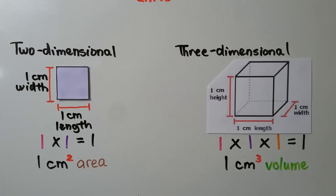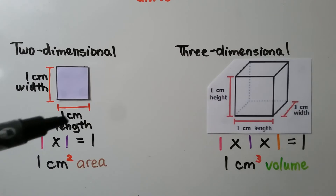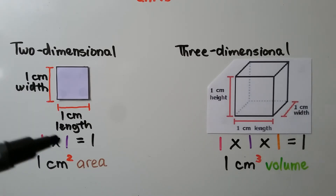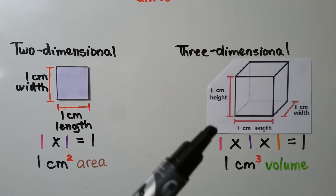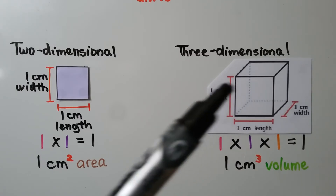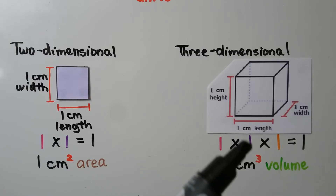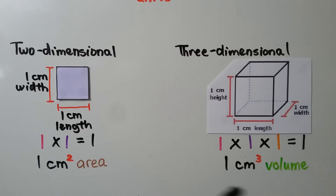For two dimensions, we do length times width. That gives us 1 times 1, which equals 1, so it's 1 centimeter squared — that's the area. For three dimensions, we do length times width times height: 1 times 1 times 1 is still 1, but now it's 1 centimeter cubed. We use a 3 exponent, and that's the volume.